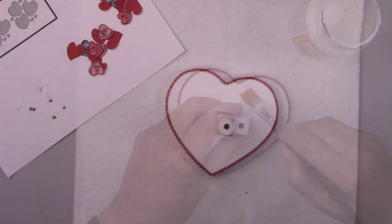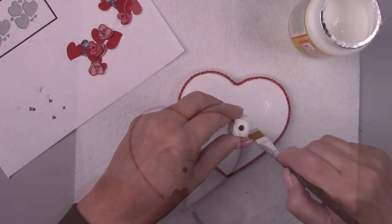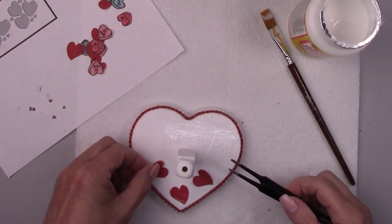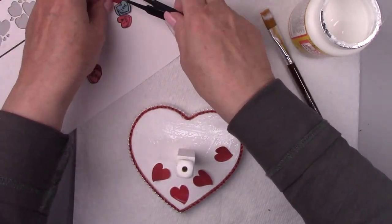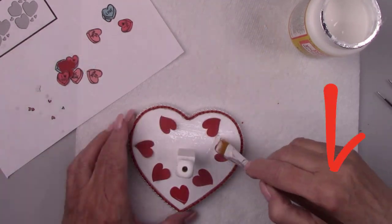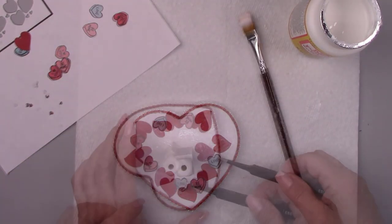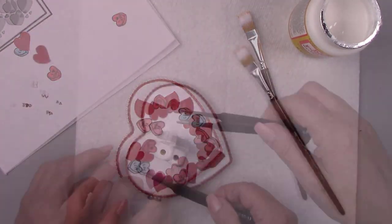I'm using some Mod Podge to glue all the tiny little hearts that I cut out with my Cricut machine. Don't forget these are available for purchase in my Etsy shop. You can find a link below in my description box. Once on Etsy, look for the section Tutorial Packages and you'll find it in there.